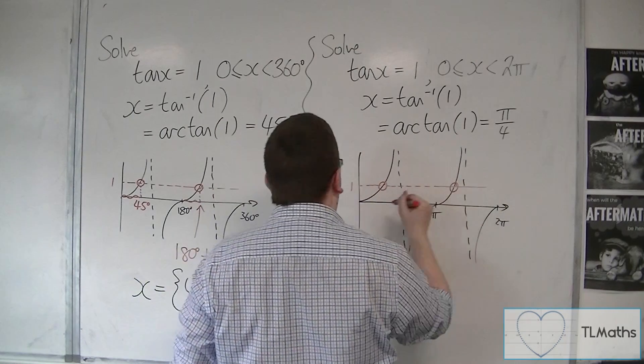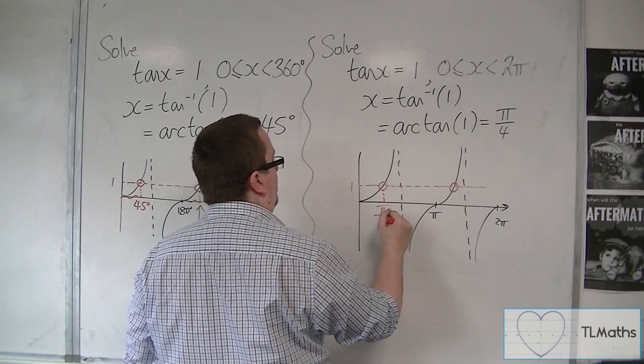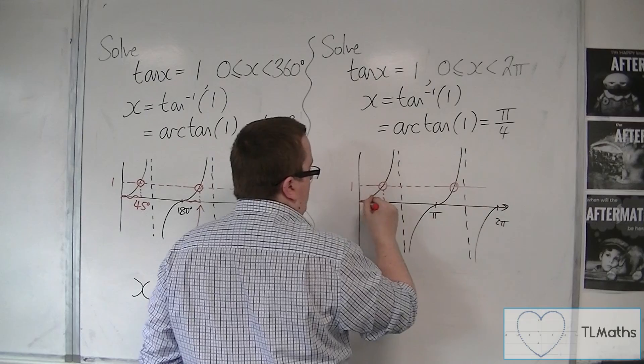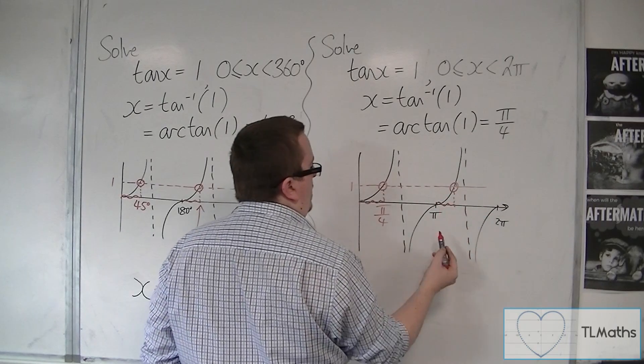So I'm cutting the curve at these two points. This first point is the pi over four that I found on the calculator. And if that distance is pi over four, then that distance must also be pi over four.